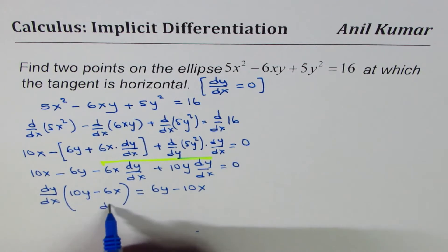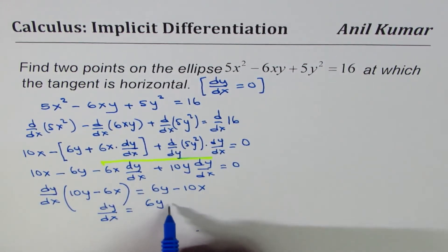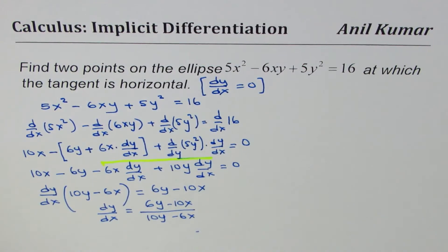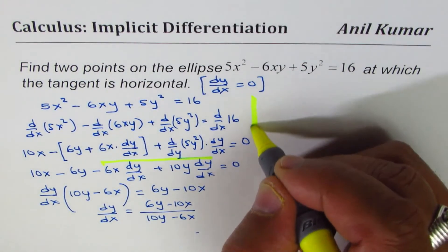So from here, we get dy/dx equals to (6y - 10x) divided by (10y - 6x). So that becomes the derivative for the given function.